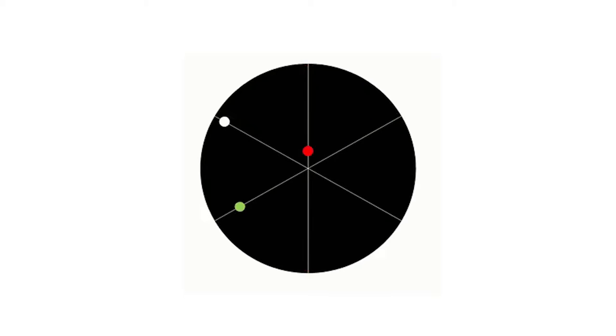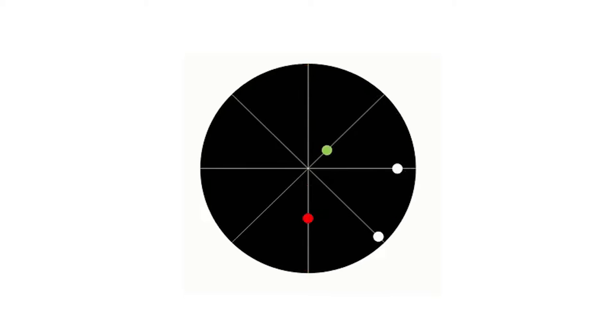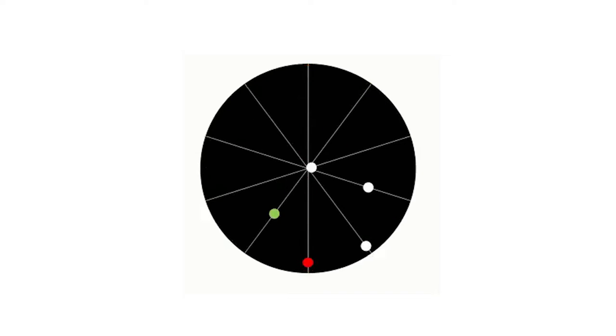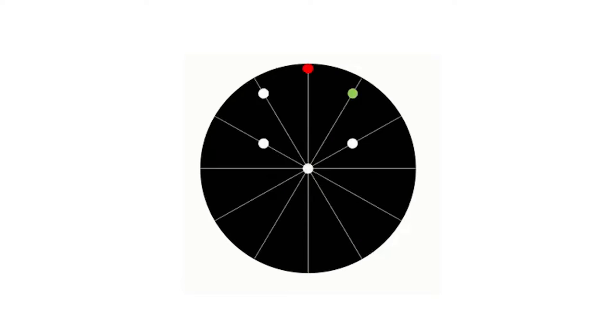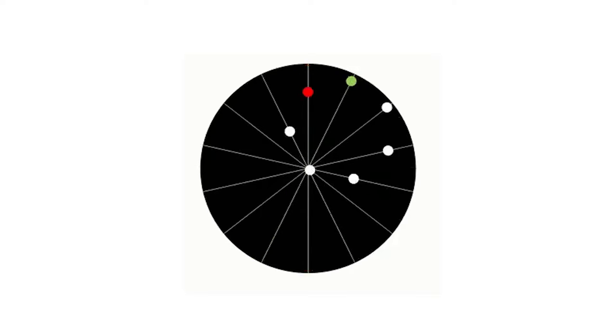In this animation, each dot moves back and forth on a line. When you add more dots, it appears that there's a circle that rolls around. It's a pretty cool optical illusion.